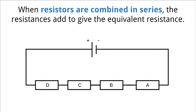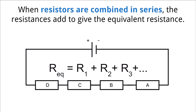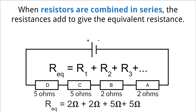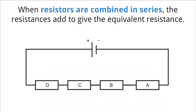To find equivalent resistance in a series circuit with multiple resistors, add the resistance of each component. Consider a circuit of four components: if components A and B have a resistance of 2 ohms each, and components C and D have resistances of 5 ohms each, using a single resistor equivalent to 14 ohms would equal the effect of the four individual resistors combined.